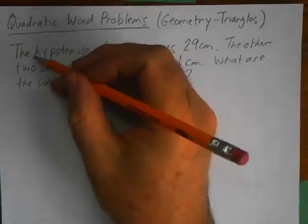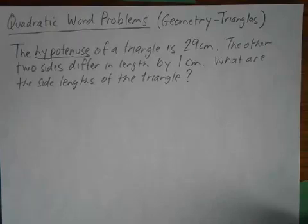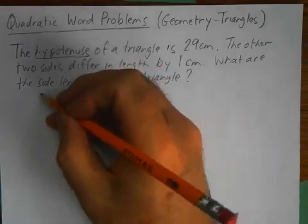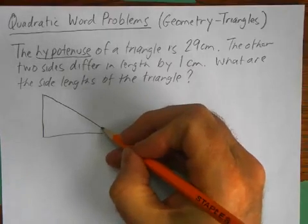So first thing I'm going to do is draw a picture of the triangle. Now the keyword here is hypotenuse. So when you think of hypotenuse, what type of triangle is that? Well, it has to be a right triangle. Only right triangles have hypotenuse. So I'm going to draw a right triangle and it doesn't have to be perfect.